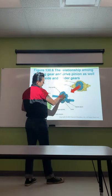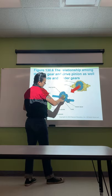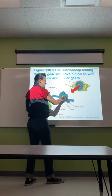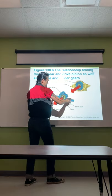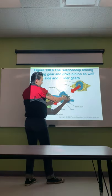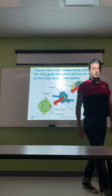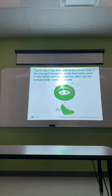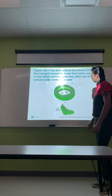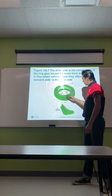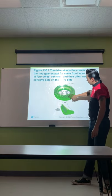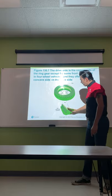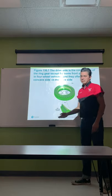The ring gear is attached to the housing or carrier, and inside you'll have your side gears and spider gears. To remove these, you have to slide the axles out first, and it comes out as a unit. The drive side is the convex side of the ring gear, except for some front axles on four-wheel drive vehicles, which often use a concave side on the drive side. The concave curved area is the coasting side.